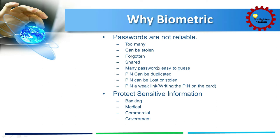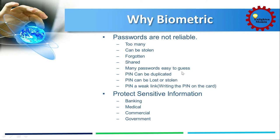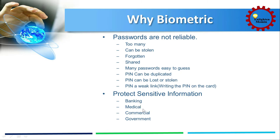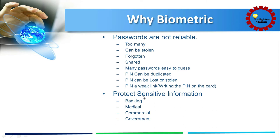PINs can be duplicated and lost or stolen. PIN is a weak link — sometimes we write our important PIN on cards or papers, so it can easily be stolen. Another important thing is protecting sensitive information. The banking system, medical, and commercial systems are very important for us. If any unauthorized access occurs to these systems, we may suffer greatly. For that reason, we need the biometric system.